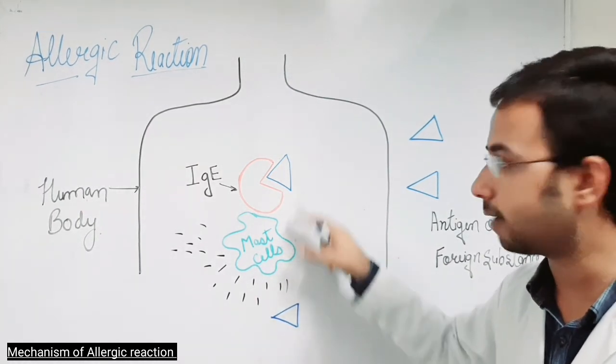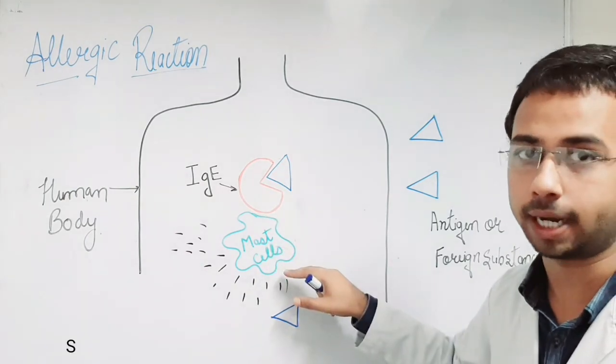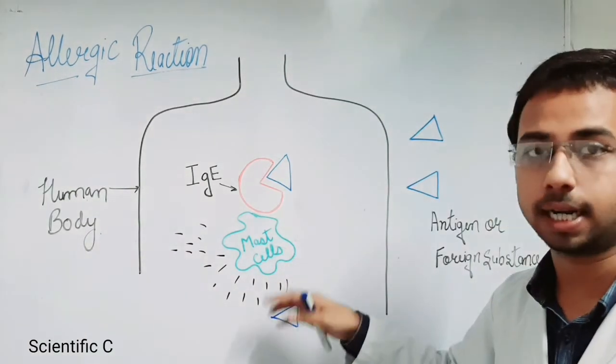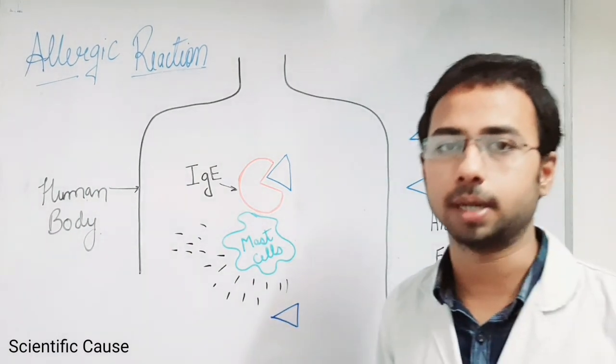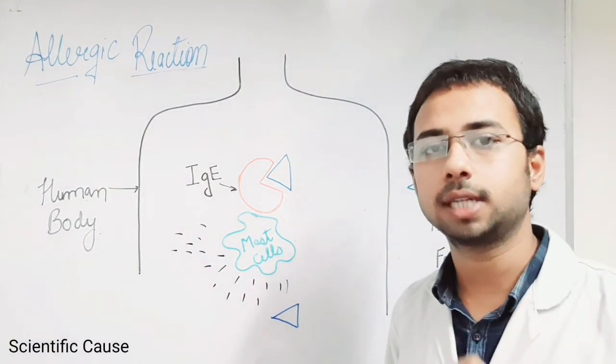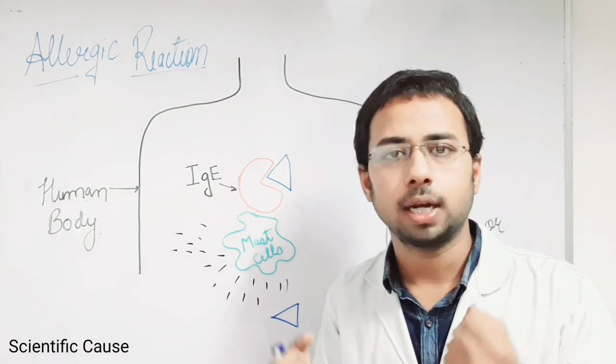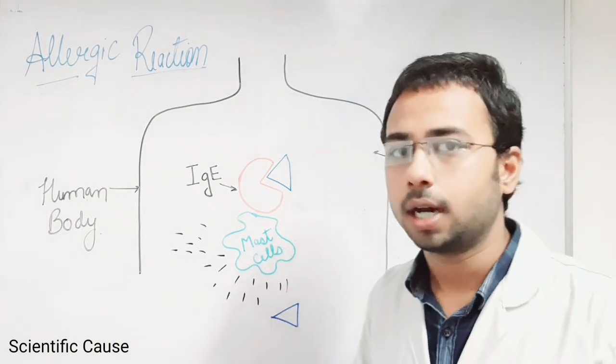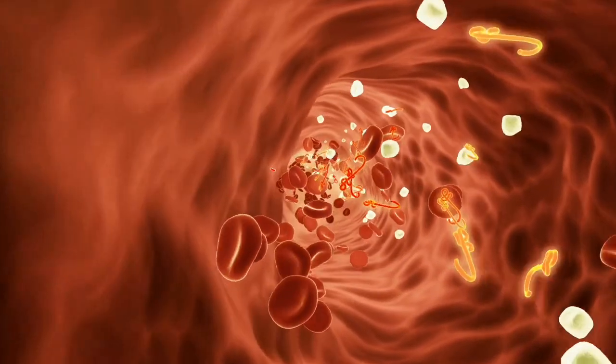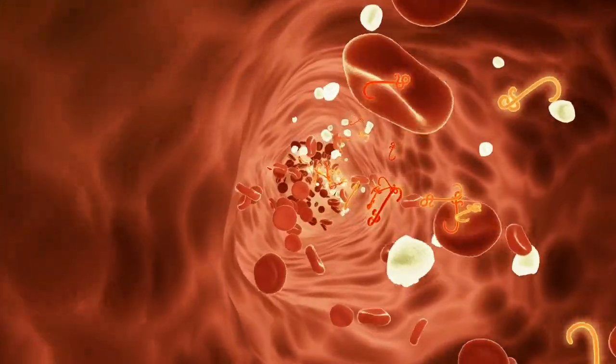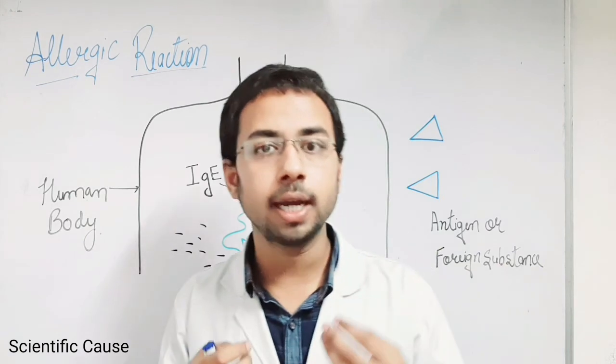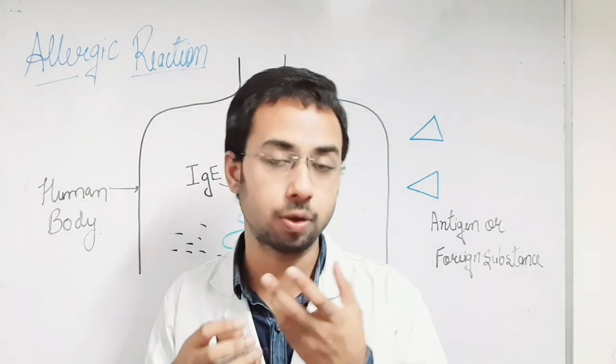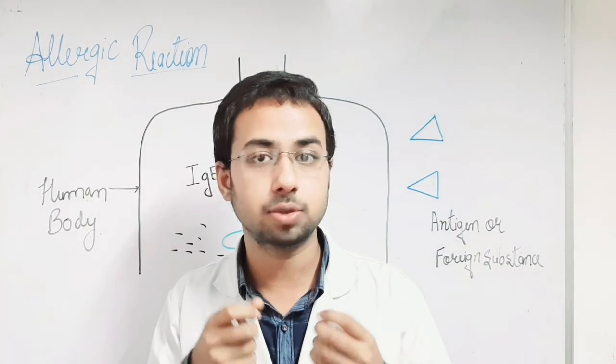When these mast cells become activated after receiving the message from IgA antibody, they start to release some chemicals. The example of a chemical is histamine. Histamine is a chemical which starts to contract or tighten the blood vessels so that the antigen cannot travel in the whole body through the blood vessels.